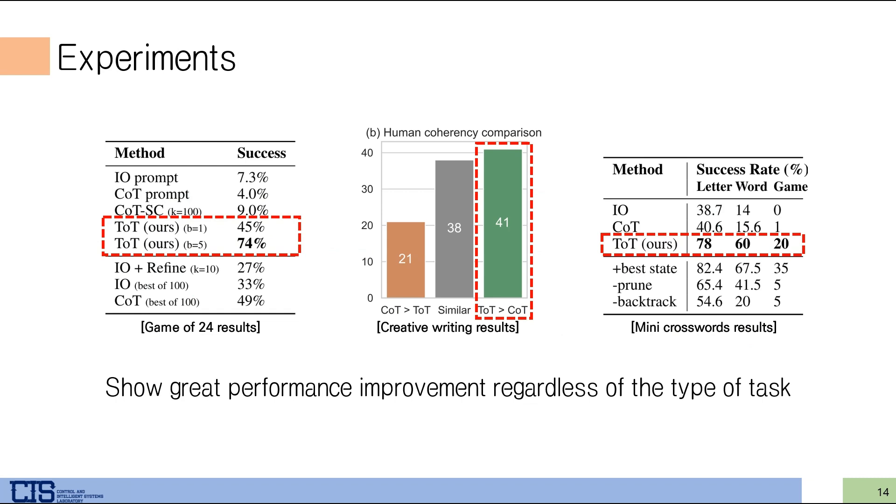They apply their work to three different tasks. Game of 24 is mathematically reasoning challenging. Creative writing needs creative thinking and high-level planning. And lastly, mini-crossword is a hard search problem involving natural language. The figure and table show that ToT shows superior performance regardless of the type of challenging task.